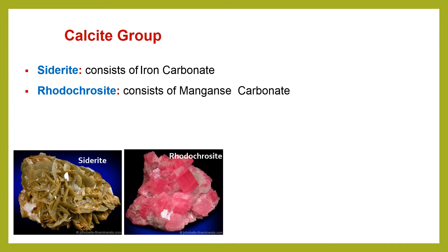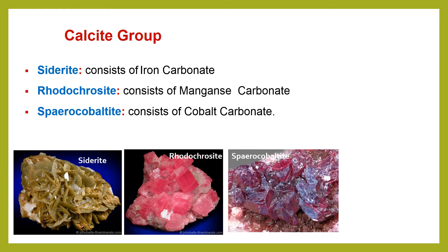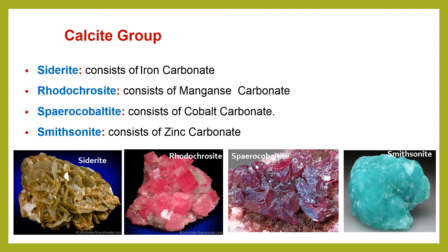Rhodochrosite is manganese carbonate — a very beautiful color of mineral. Spherocobaltite comes from cobalt, so it is a cobalt carbonate. Here is a picture of it. Smithsonite is a zinc carbonate. So if asked — for example, about iron carbonate or manganese carbonate — you just give me the name of the corresponding mineral, such as calcium carbonate, iron carbonate, and so on.